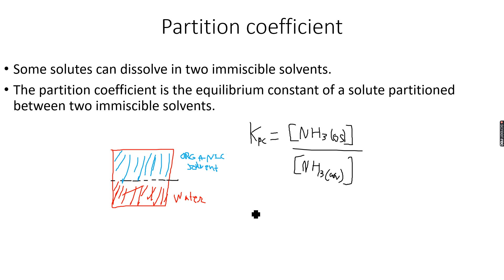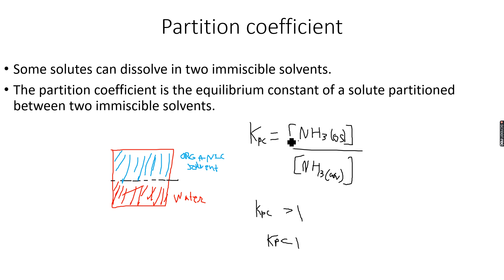If KPC is greater than 1, it means that more ammonia dissolves in the organic solvent than in water. But if KPC is less than 1, that means more ammonia dissolves in water than in the organic solvent. That's how we interpret partition coefficient values. The partition coefficient is the equilibrium constant of a solute partitioned between two immiscible solvents — you must remember that the solvents must be immiscible.